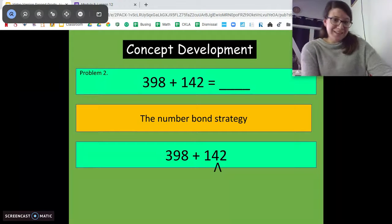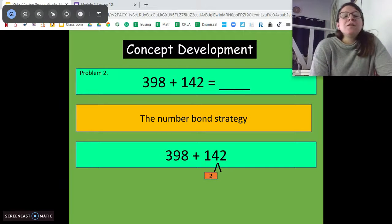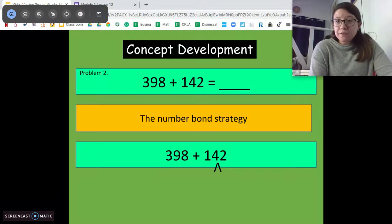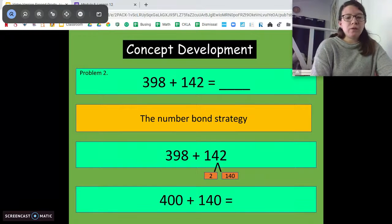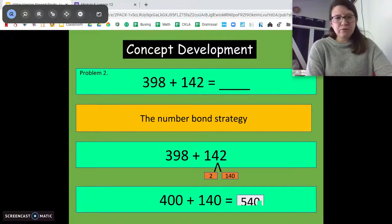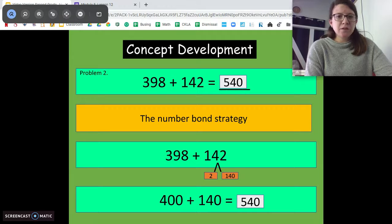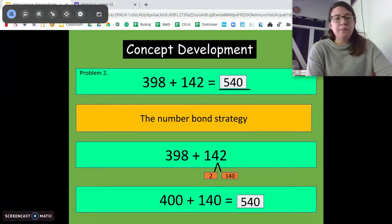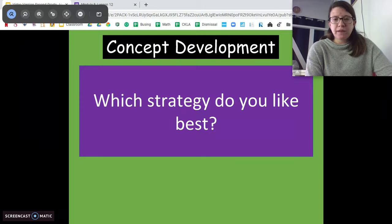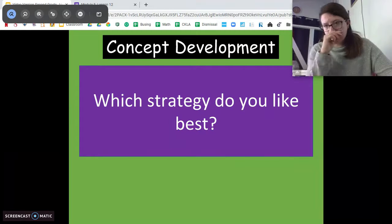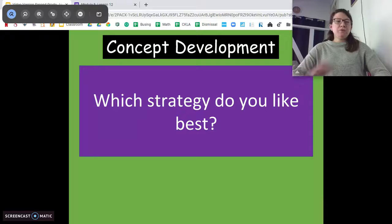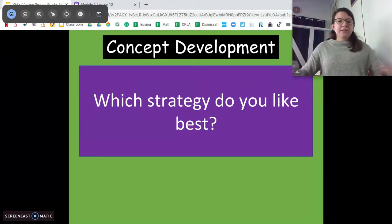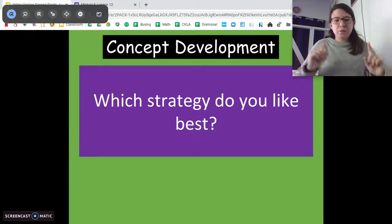We can also do the number bond strategy. I like this one a lot. Same thing. We know that we need 2 more to get to 400. So we're going to take that 2 out. We have 140. So now we have 400 plus 140. 540. Same answer. So no matter what strategy we use, we got the same answer. Which one did you like best out of those 3 options? Talk to someone at home and let them know. Which strategy did you like best? Totally good with me with whatever one you want to do. Everybody's brain is different. Everybody's math brain is different. Do what makes sense to you.